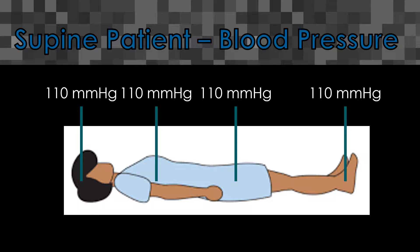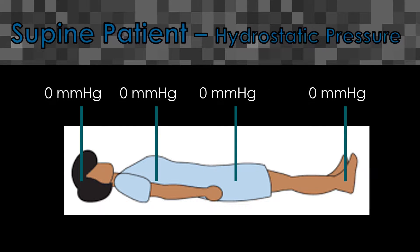Blood pressure is the same throughout the body, so if we could stick a little meter somewhere in the body at any point, we should get the same blood pressure. In our example, our patient's blood pressure is 110 millimeters of mercury. When calculating hydrostatic pressure, the level of the heart is zero, because there's no change in distance from the heart to the heart. When a patient is supine or lying flat on their back, it puts the entire body at the same level of the heart, so at all points in the body the hydrostatic pressure is also zero.